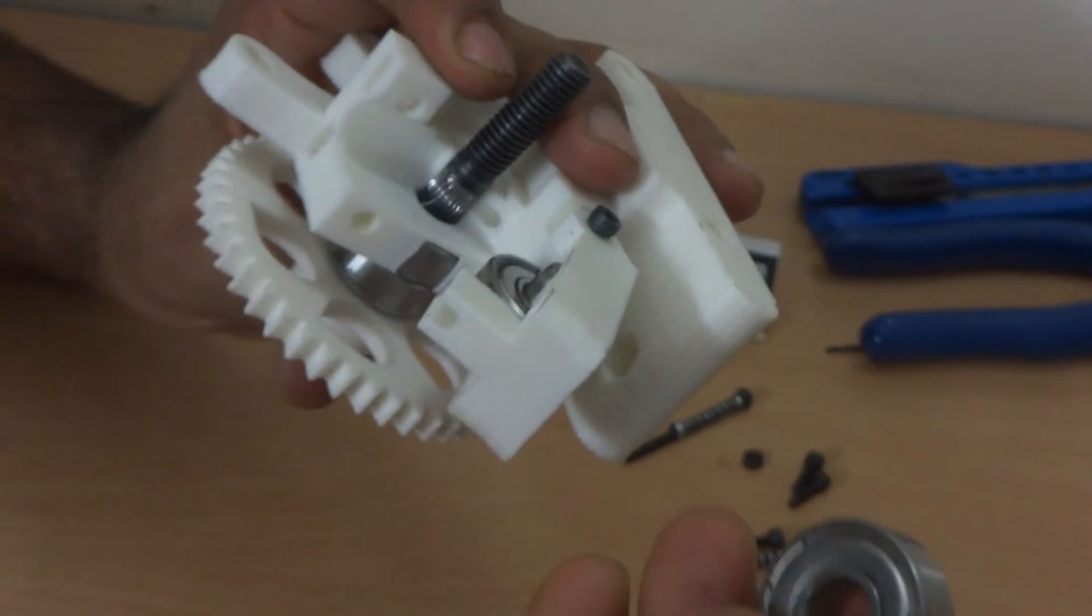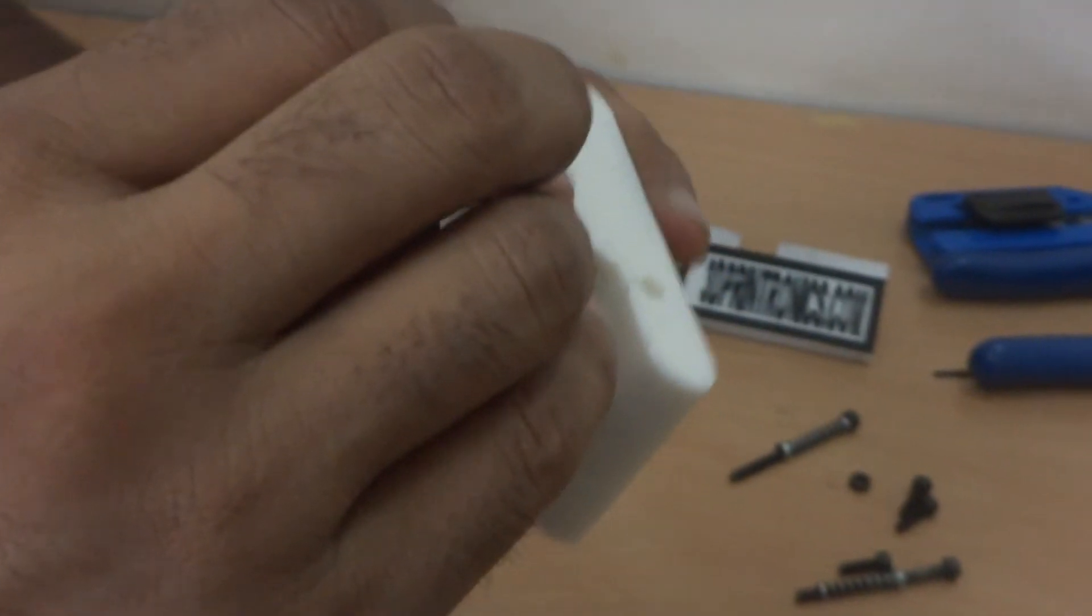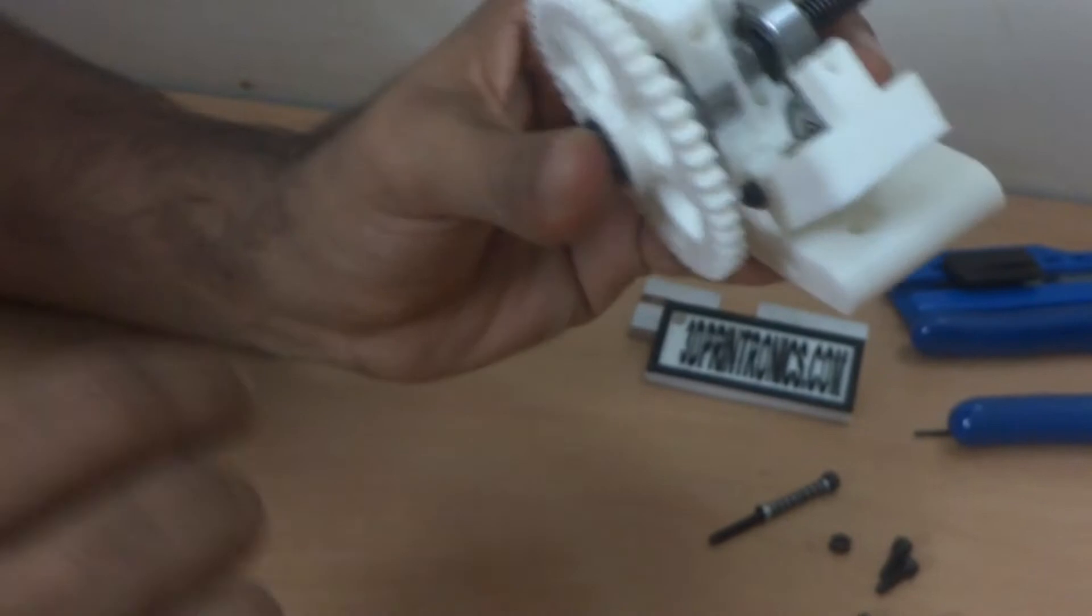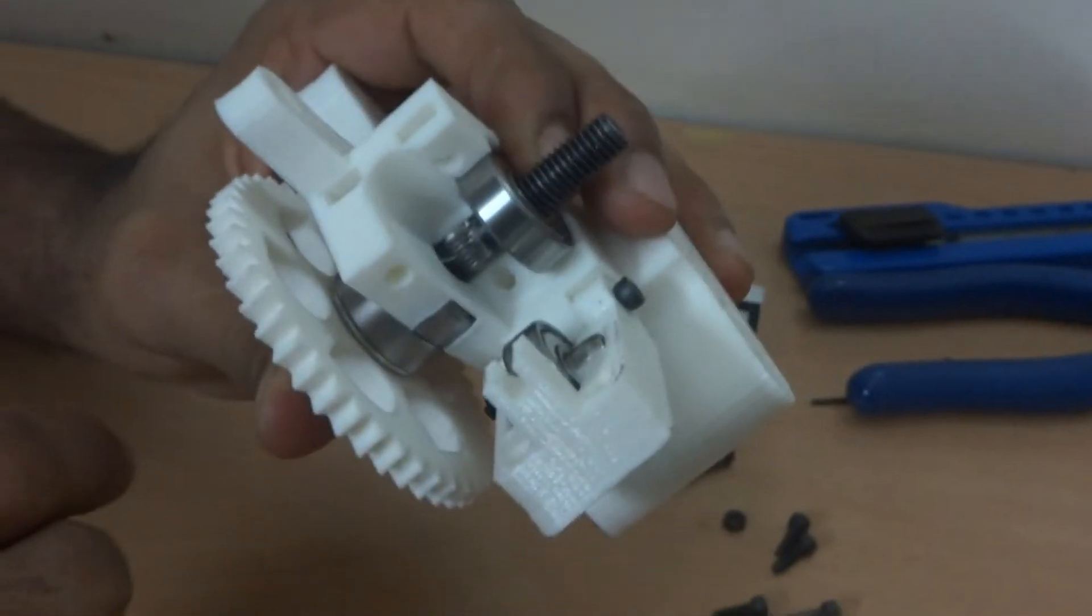Now you can see that the hob portion is aligning perfectly with the hole of the extruder. After this take one more 608 double Z bearing and install it like this. And it should fit in like this into the extruder.